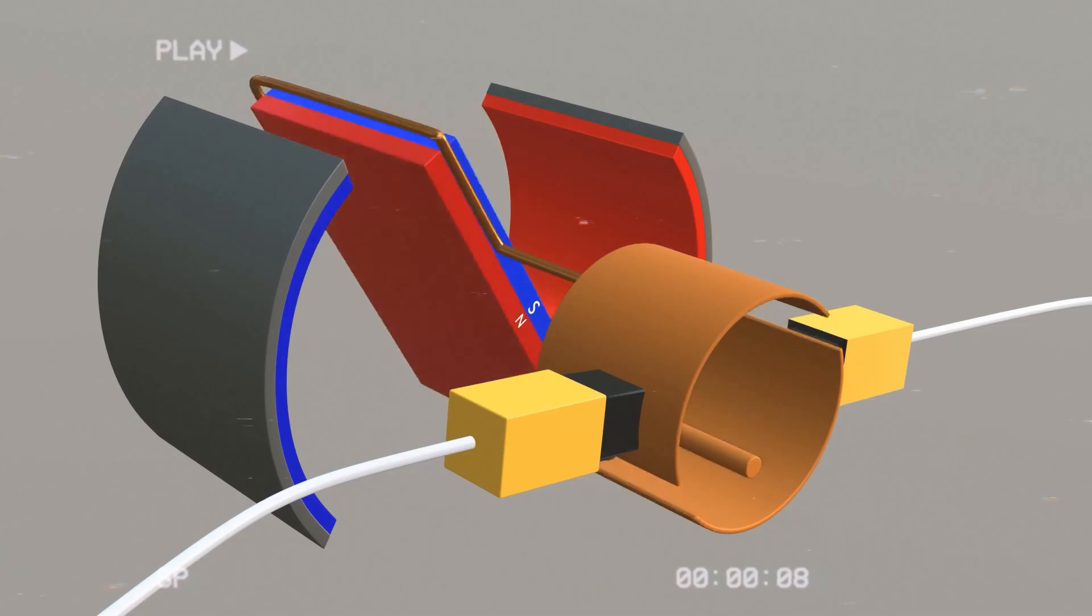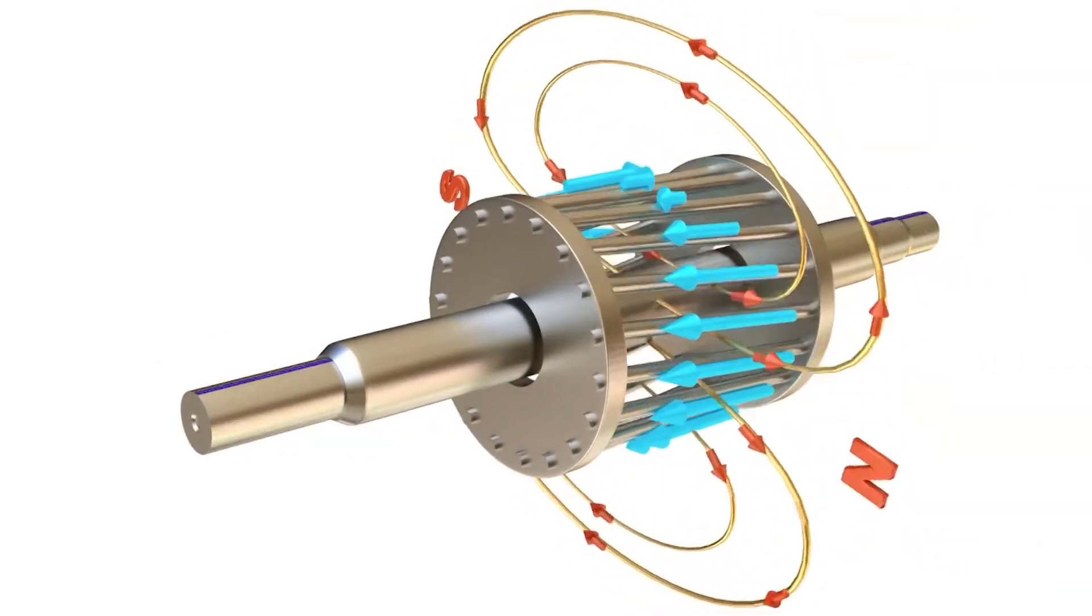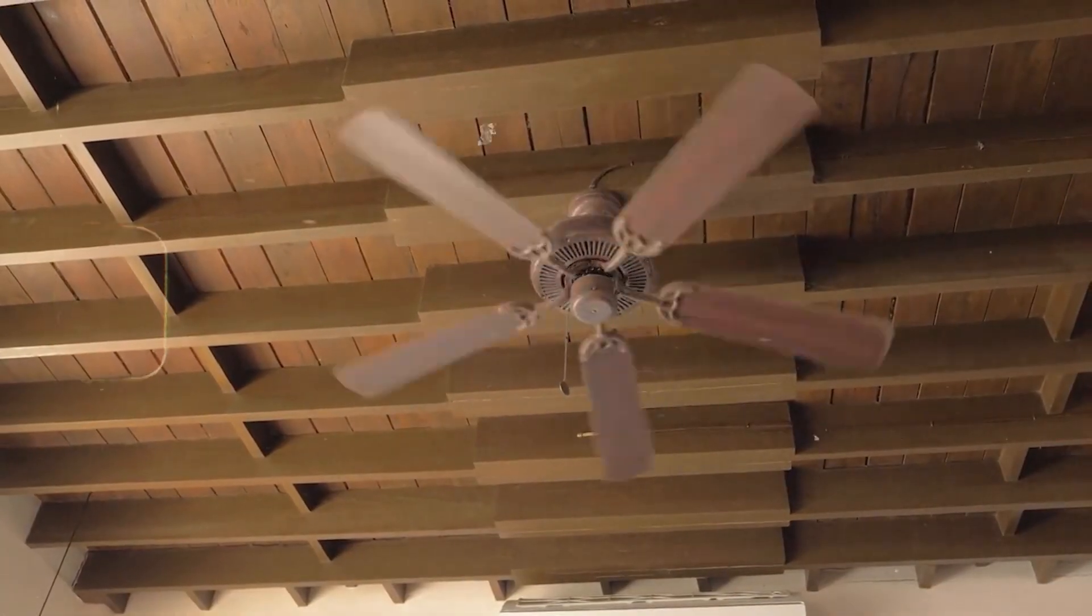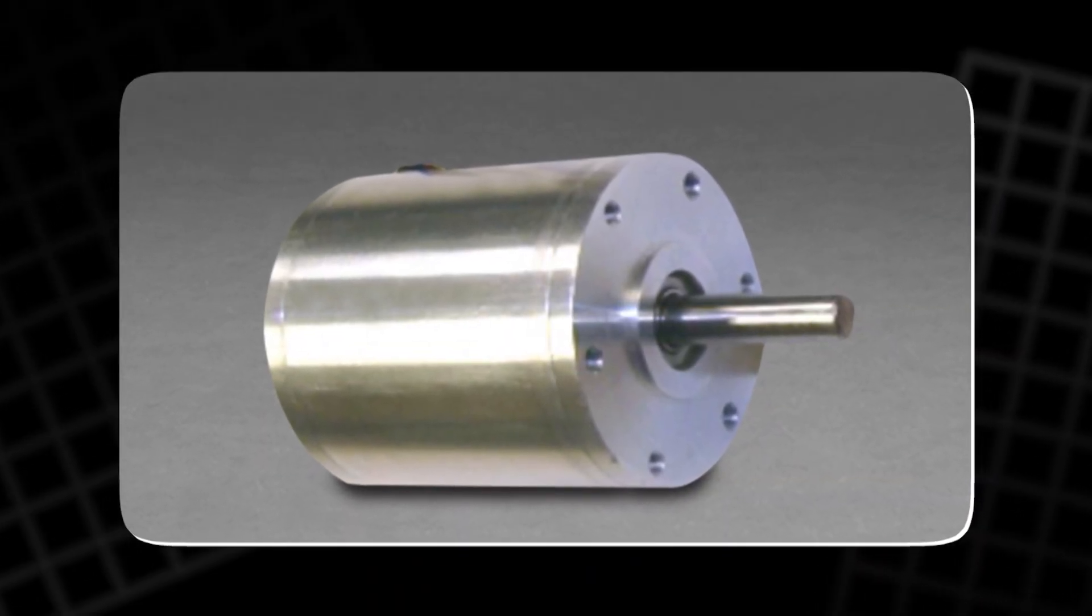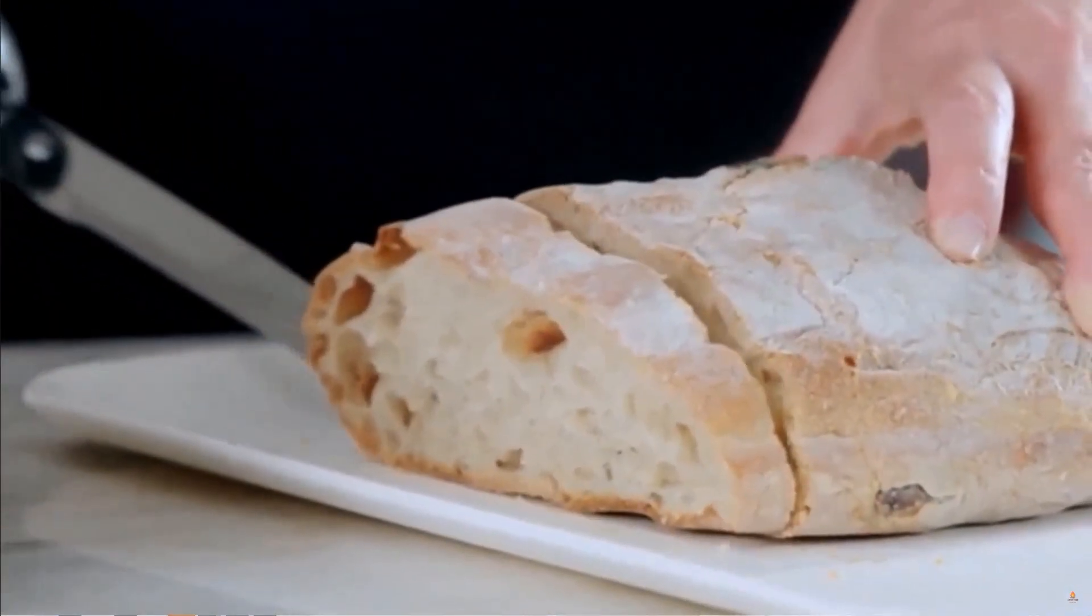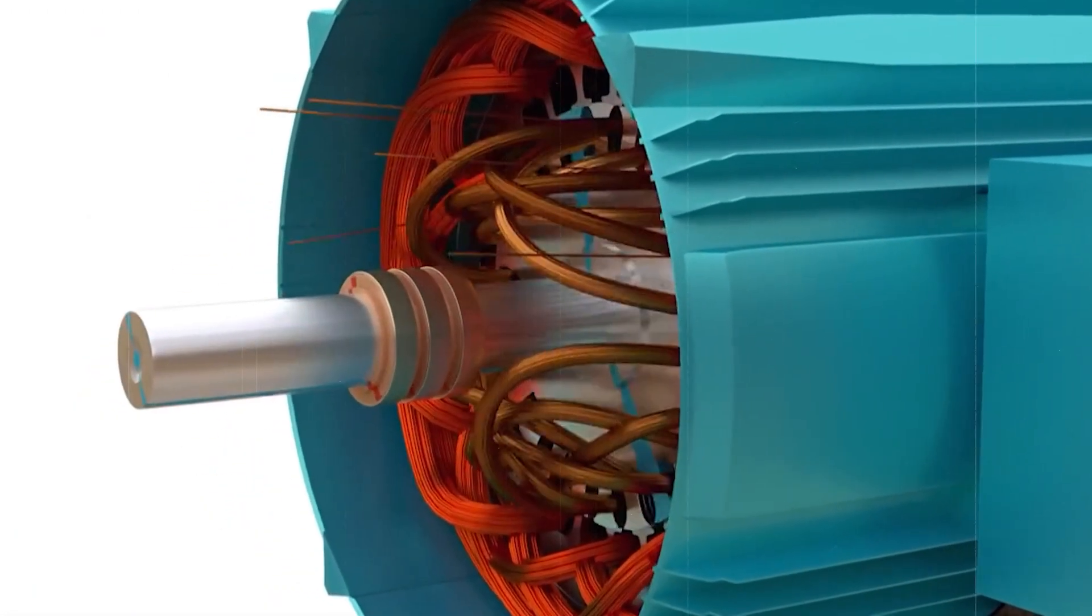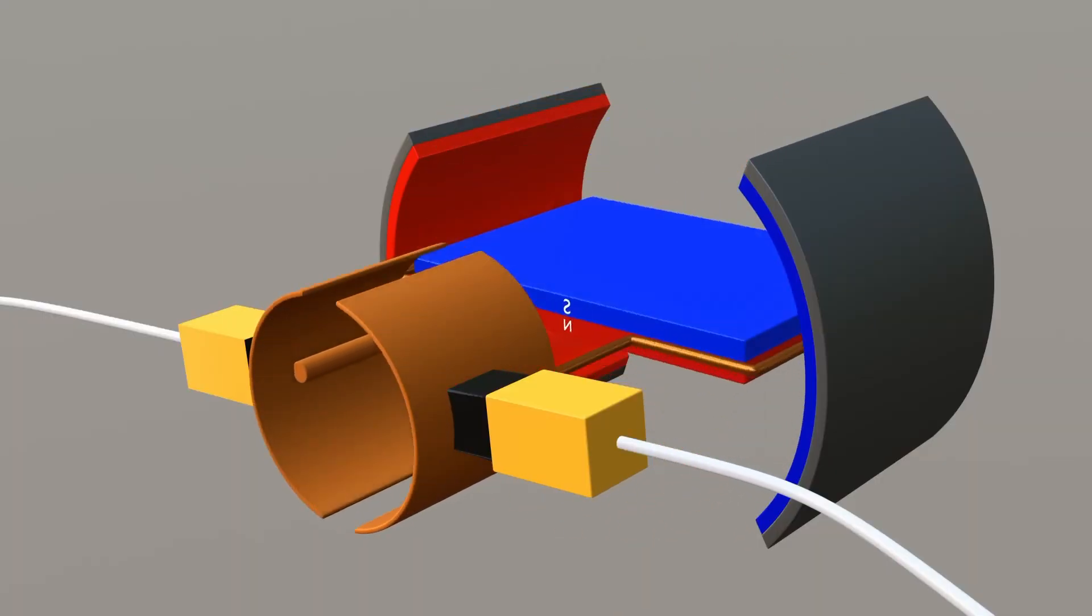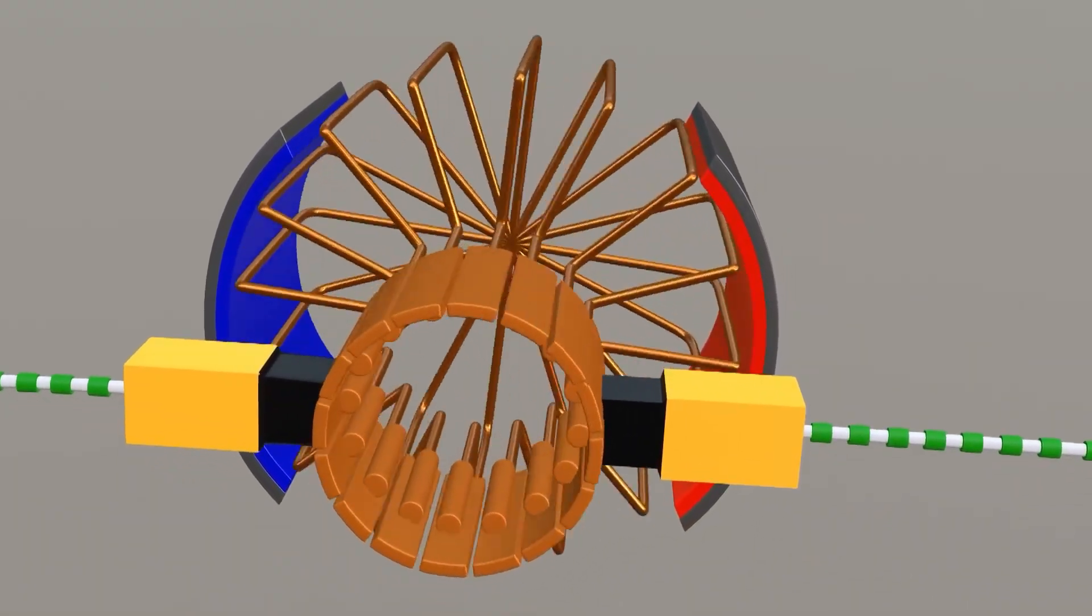Every time a motor spins, it embodies a remarkable union between invisible forces. Electricity generates magnetism, magnetism creates motion, and motion, in turn, powers the world. Though often hidden from view, motors make modern convenience possible. Whether cooling a room, cutting food, or delighting a child with a moving toy, they represent one of humanity's most elegant achievements. At the heart of each one lies the simple truth. Controlled currents and magnetic fields can make the inanimate come alive, turning silence into spin, and spin into the rhythm of modern life. And that's pretty cool.